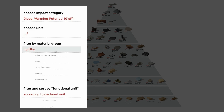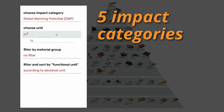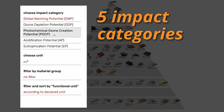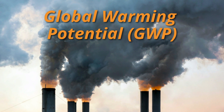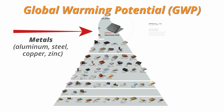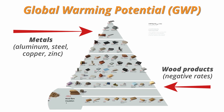This interactive version of the material pyramid allows you to toggle between five impact categories. The first is global warming potential, or carbon footprint. GWP calculates how much heat is absorbed and trapped by a certain amount of gas compared to carbon dioxide. The higher the value of the GWP, the greater the impact on the environment. Metals like aluminum, steel, copper, and zinc occupy the highest level.